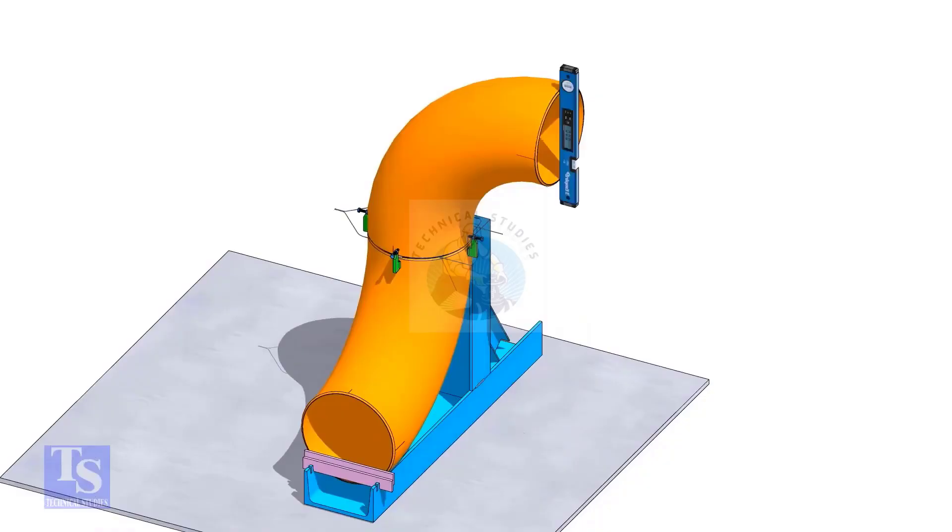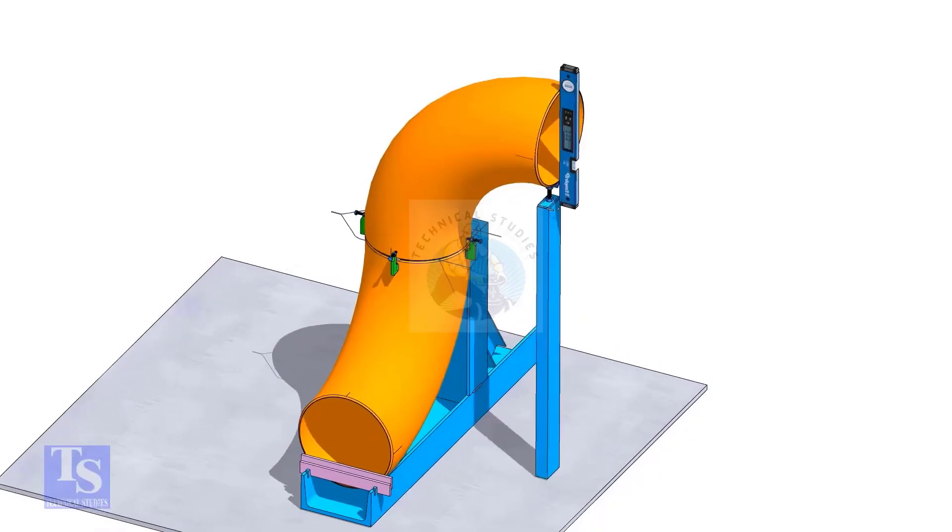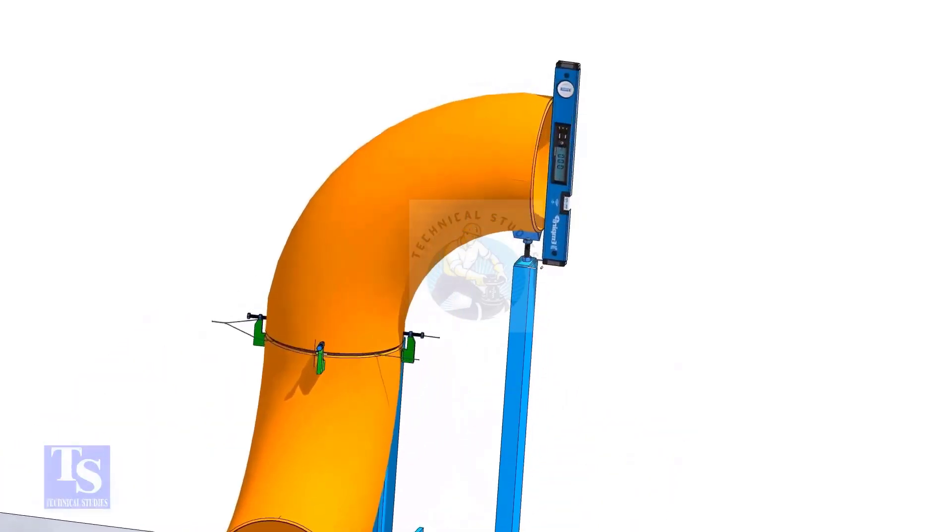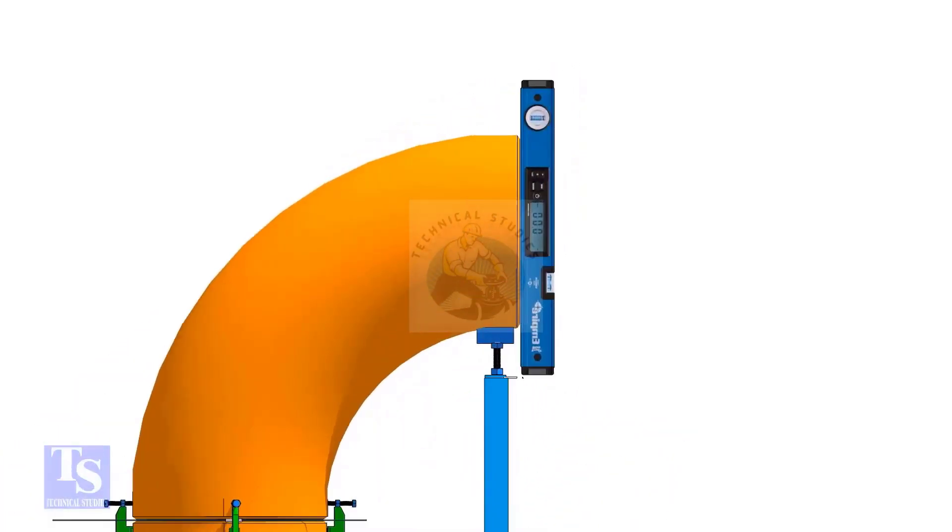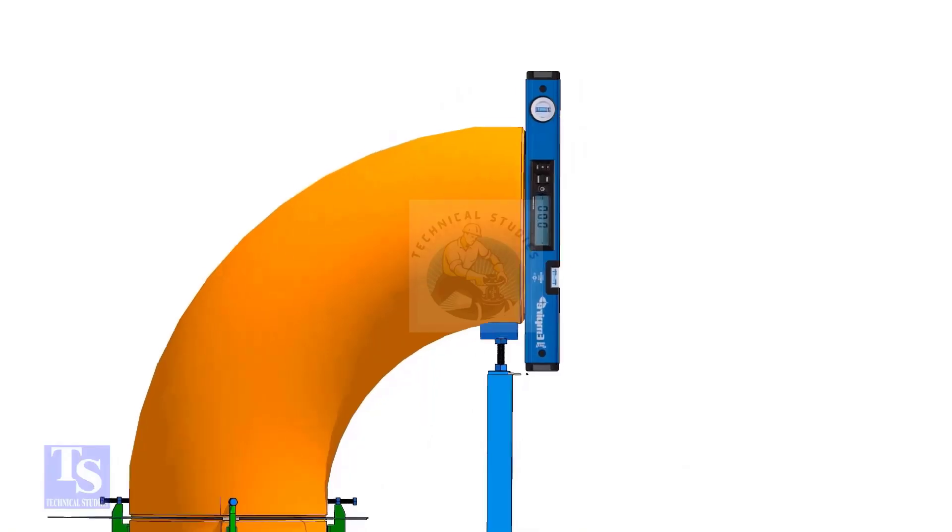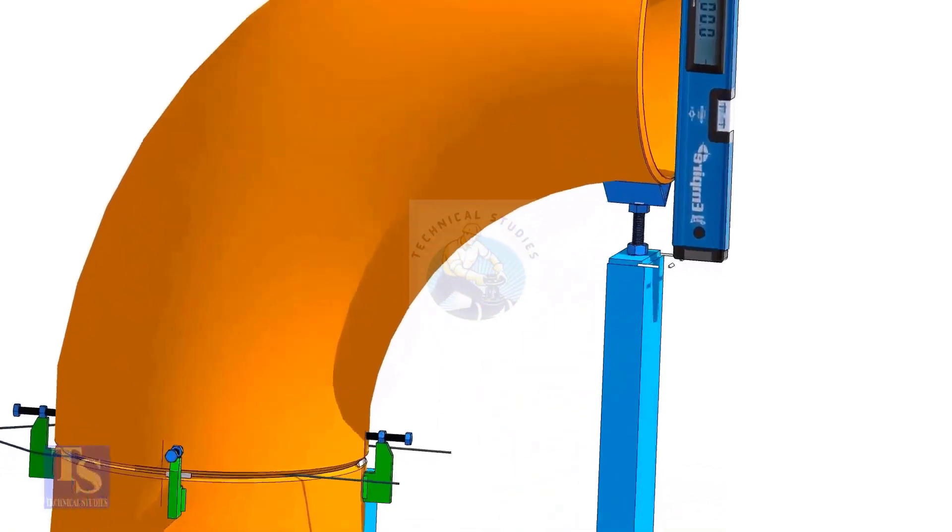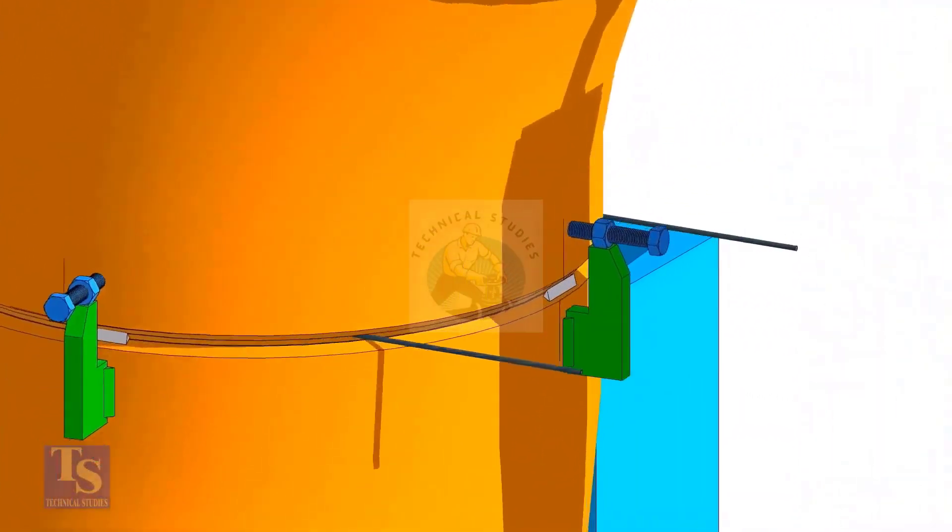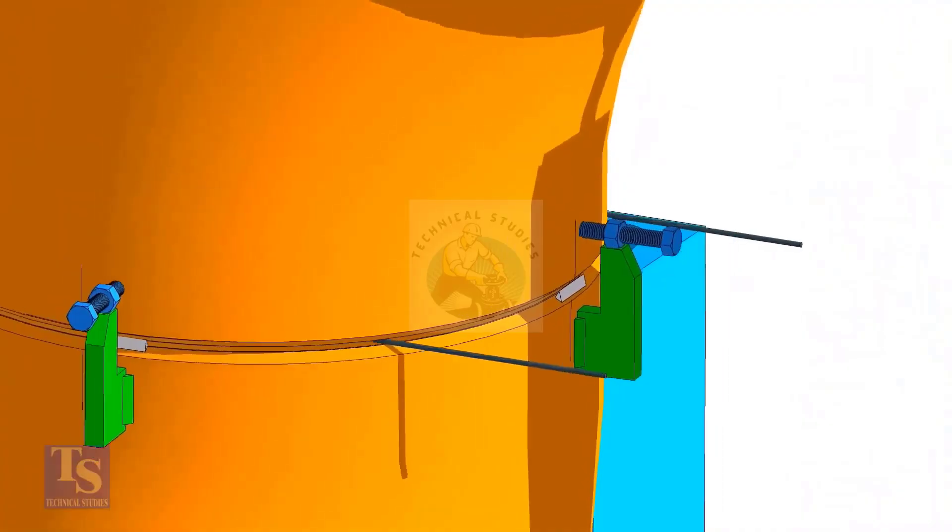Check the verticality of the elbow face. Tack weld on this side and the back side of the elbow.